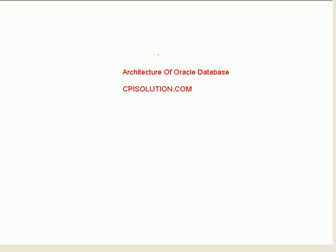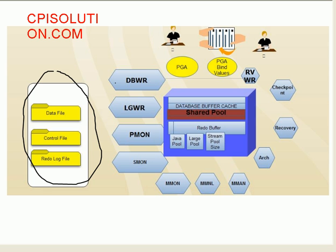In this video we will understand the architecture of an Oracle database. An Oracle database has memory structures and data files — the physical structure — to handle and manage the data. The physical structure of the database comprises data files, control files, and the redo log file.